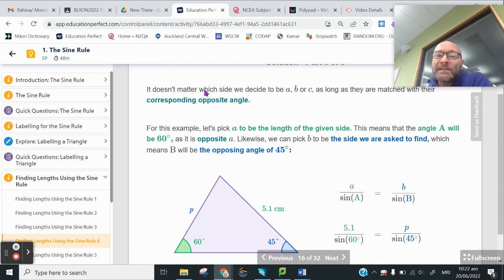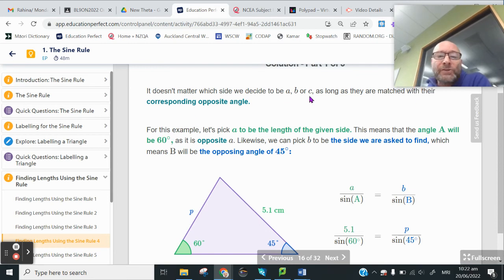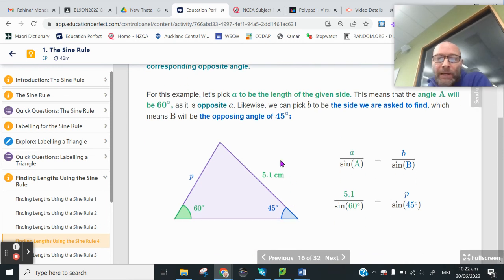Okay, so as we said, it doesn't matter which side we let be A, B, or C as long as they get matched with their corresponding opposite angle. For this example, for no particular reason, we let the side A be the 5.1.